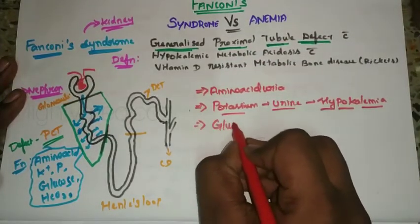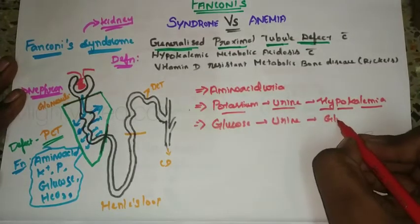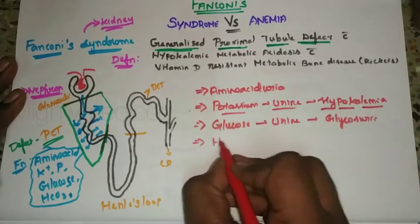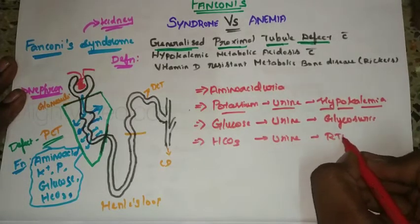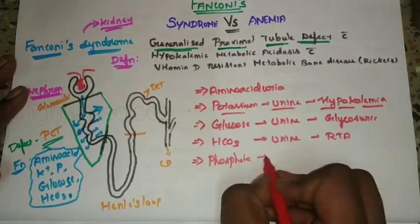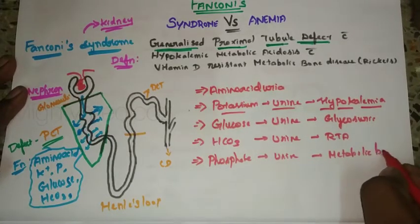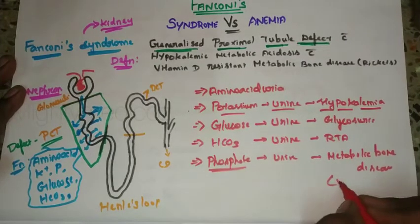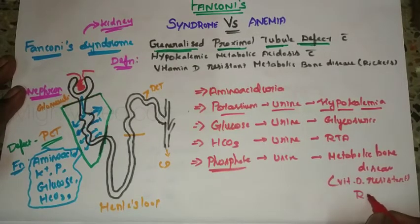Loss of glucose causes glycosuria. Loss of bicarbonate causes renal tubular acidosis and metabolic acidosis. Loss of phosphate causes metabolic bone disease. Because phosphate is low, Vitamin D is not effective, resulting in Vitamin D resistant metabolic bone disease — which is essentially Vitamin D resistant rickets.